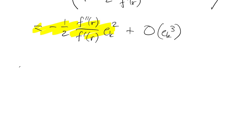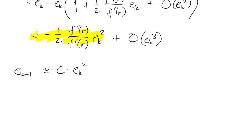And what we're left with is that ek plus 1 is equal to this times ek squared plus stuff that we're going to ignore. So as long as ek is small we can ignore the higher order terms, and we can just say that the next error is roughly a constant times the current error squared.